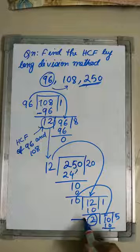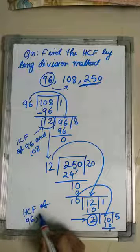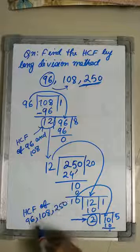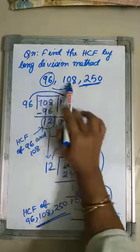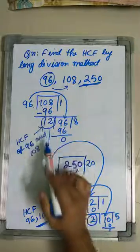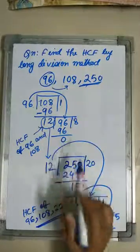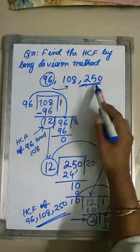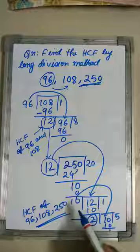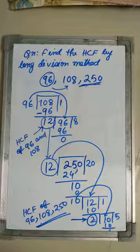So 2 is the HCF of 96, 108, and 250. I hope you have understood what I did. I found the HCF of the two smallest numbers first, then used that result to find the HCF with the next number, getting 2. If you don't understand, we shall discuss it in our next class.